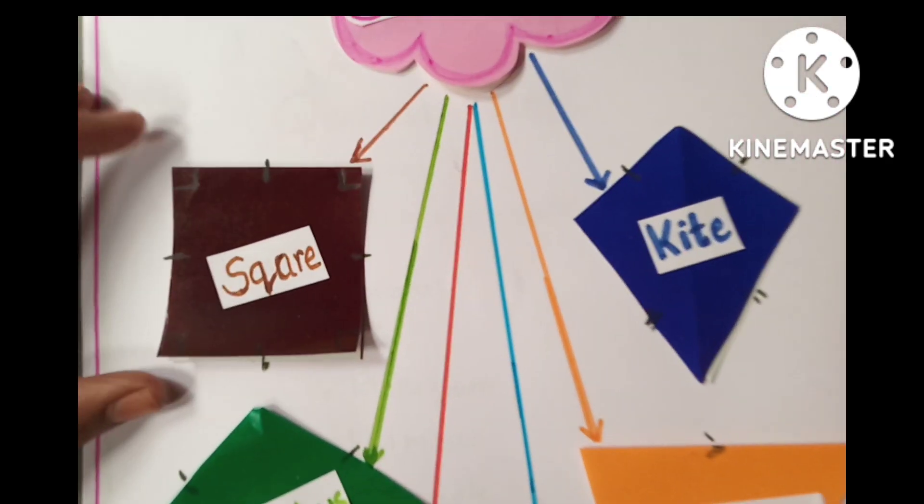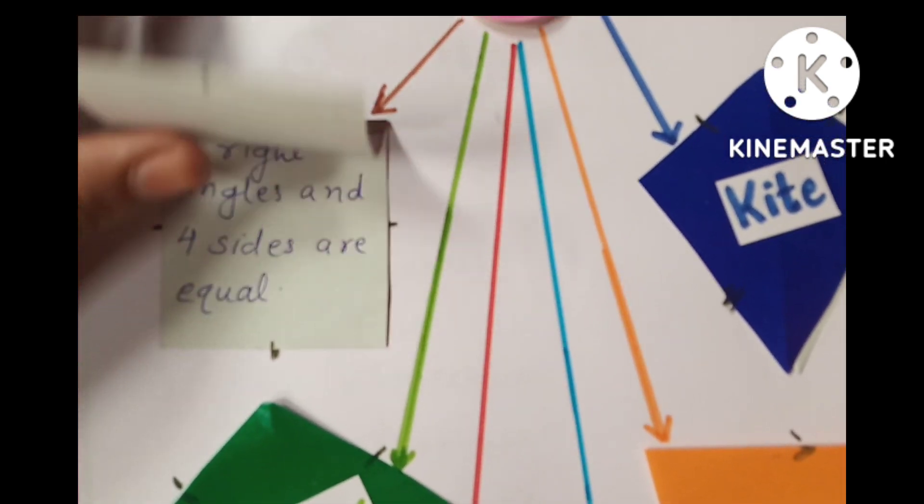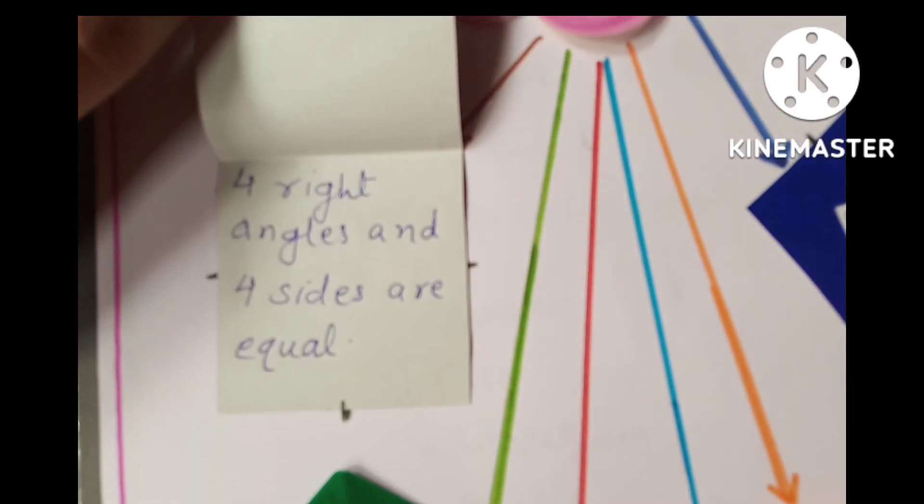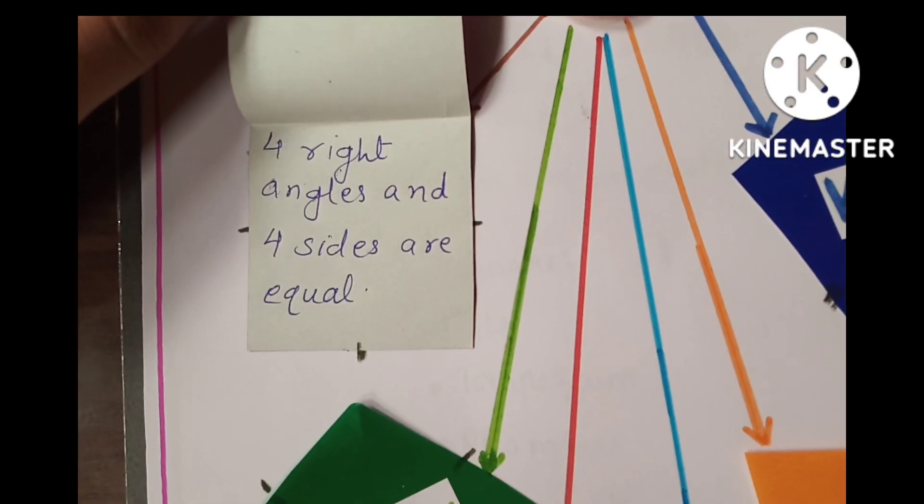Fourth type is square. Here are its properties.